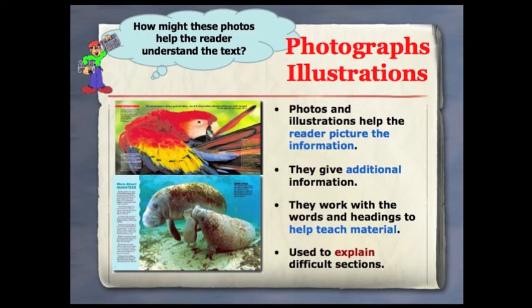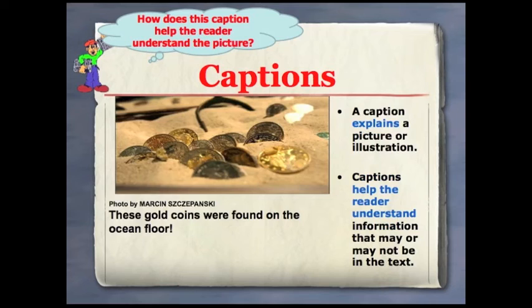One of the easiest text features to find are photos and illustrations. This text feature really helps a reader visualize the information. Captions are connected to photos or illustrations and their job is to explain what's going on in the picture.